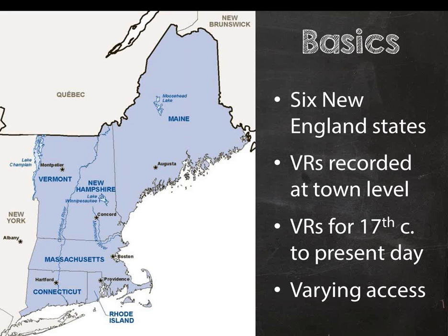Every state has different restrictions regarding the most current records that they possess, and our databases and holdings reflect that. For example, the state of Massachusetts has a 92-year restriction on access. You can obtain these records from the state, city, or town; however, you will not find them at NEHGS or anywhere online currently. So records from 1921 to 1925 for births, marriages, and deaths will not be made public until 2017.